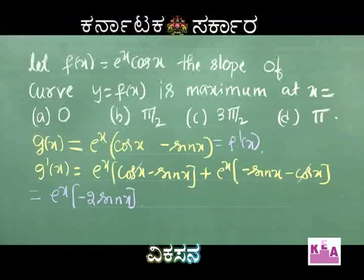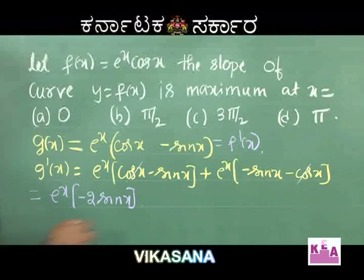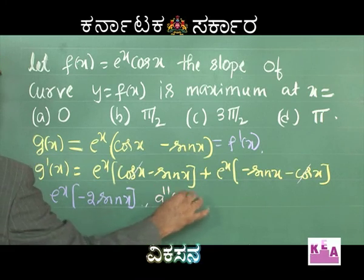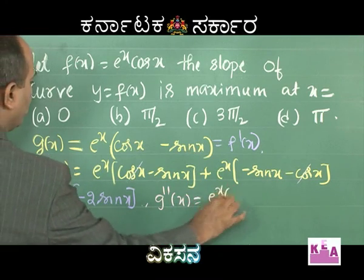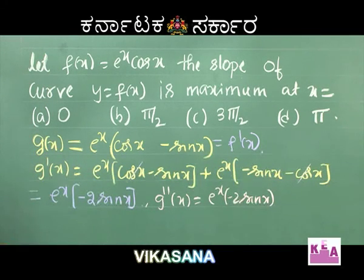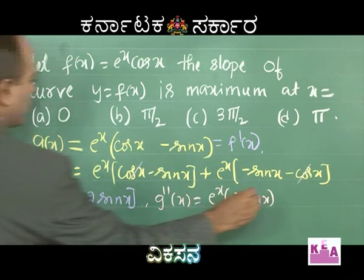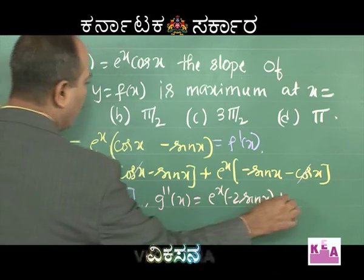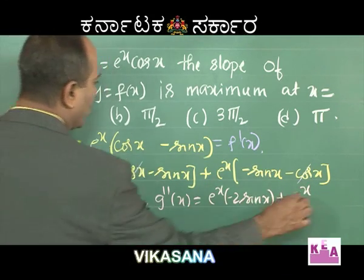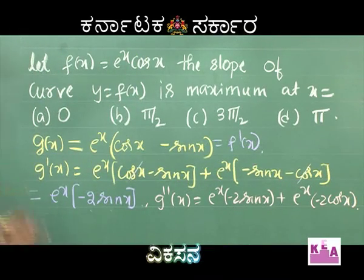So g'(x) = eˣ(−2 sin x). Now g''(x): differentiating eˣ(−2 sin x) — by keeping −2 sin x and differentiating eˣ gives eˣ(−2 sin x), plus keeping eˣ and differentiating −2 sin x gives −2 cos x.